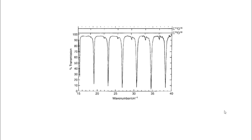Now let us look into the rotational spectrum of carbon monoxide again. Apart from the distinct peaks, there are a few small peaks that we can identify in the spectrum. These small peaks shown in the spectrum are due to the natural abundance of the ¹³C isotope — that is, they are from ¹³C¹⁶O. The larger peaks are coming from ¹²C¹⁶O.